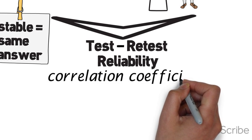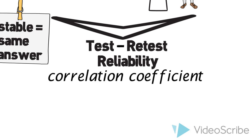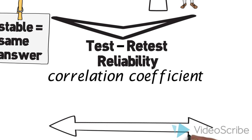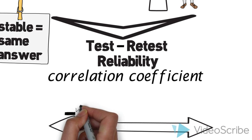Usually by using a measure of association, such as a correlation coefficient, between the answers you get the two times you ask the question.